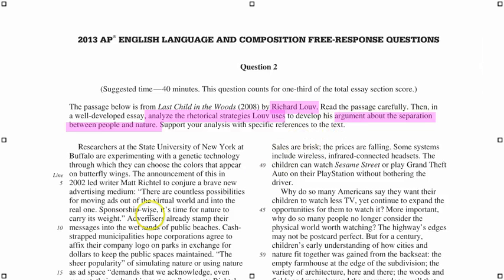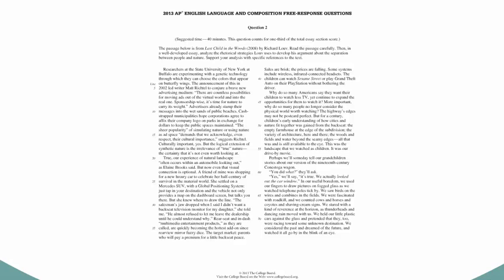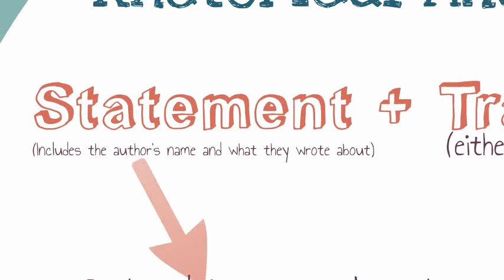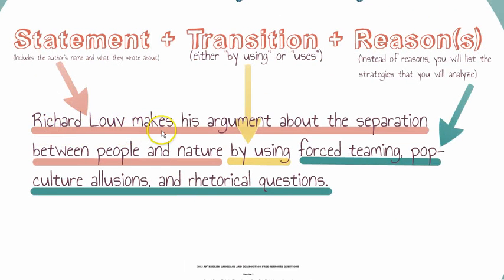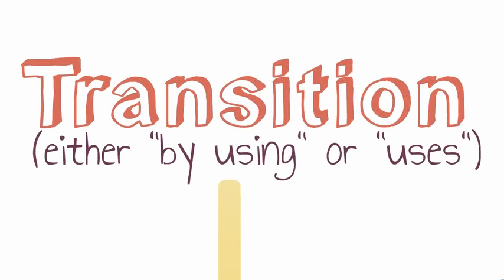So we're going to analyze Richard Louvre's strategies that he used when making his argument about the separation between people and nature. For the rhetorical analysis, the statement portion of your thesis would basically just include the author's name and what they wrote about. It would look something like this: 'Richard Louvre makes his argument about the separation between people and nature.' Then for the transition, most of the time for the rhetorical analysis essay you're going to use the phrase 'by using' or the word 'uses.'